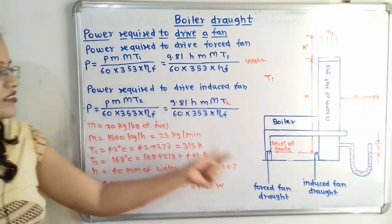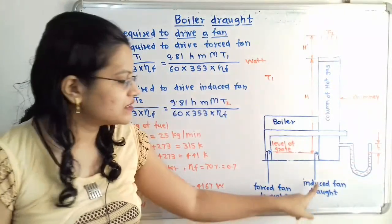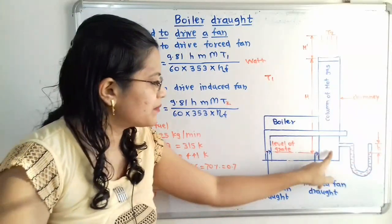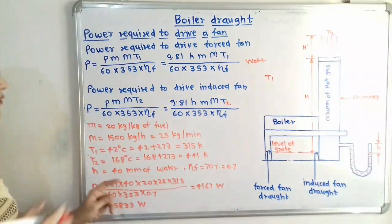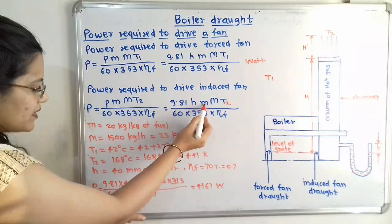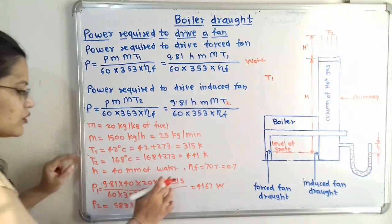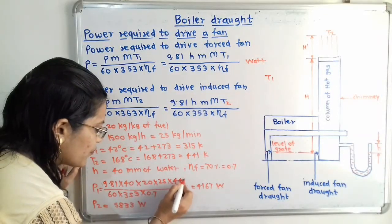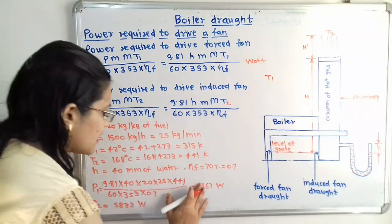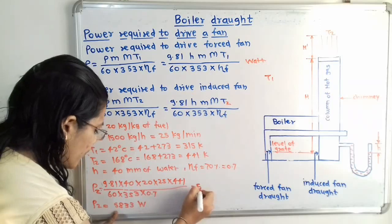If an induced draft fan is installed instead, we use T2 = 441 K because the induced draft fan draws flue gases from the combustion chamber. P2 = 9.81 × 40 × 20 × 25 × 441 / (60 × 353 × 0.7) = 5833 watts.